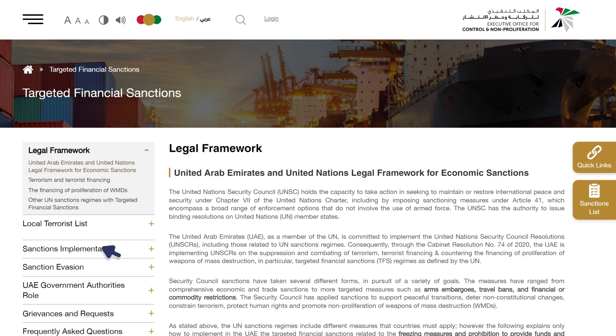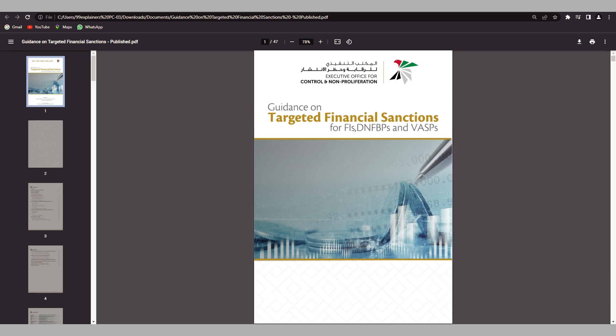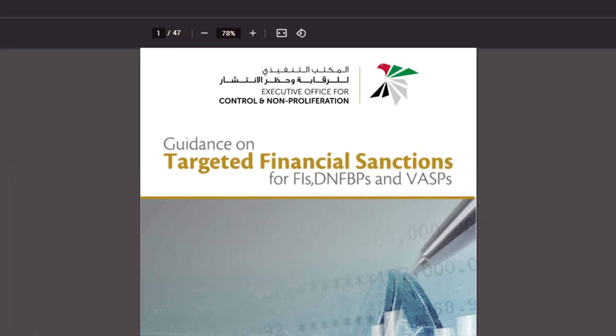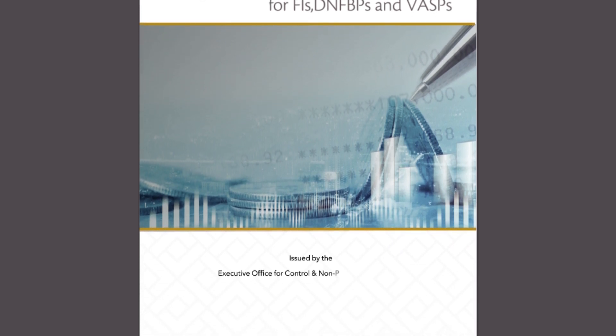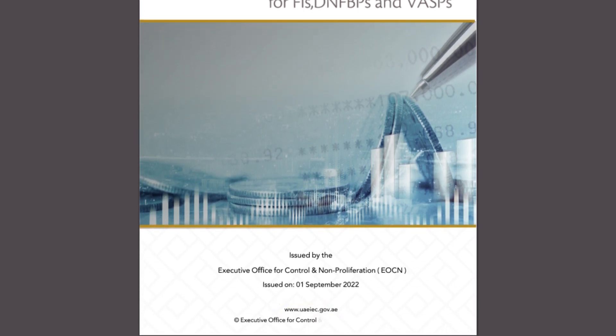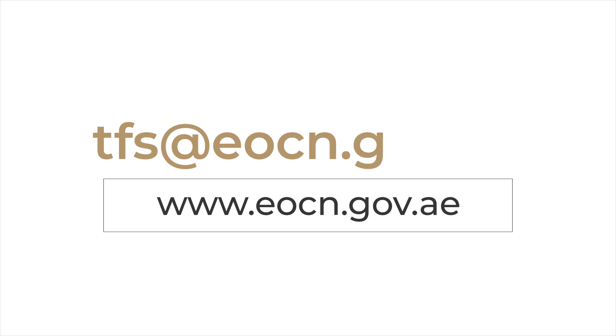The Executive Office for Control and Non-Proliferation has published a detailed guideline on the implementation of targeted financial sanctions. The guideline can be found on the Executive Office website at www.eocn.gov.ae. For more information on the implementation of targeted financial sanctions, please visit www.eocn.gov.ae or contact us by sending an email to tfs@eocn.gov.ae.